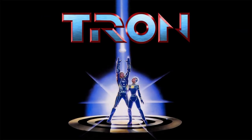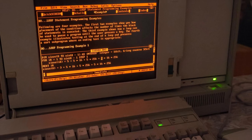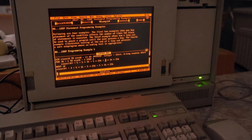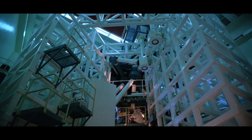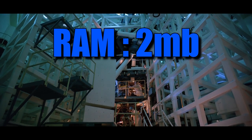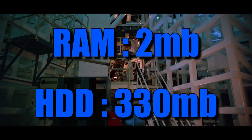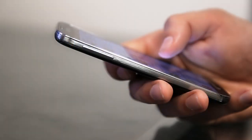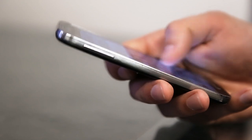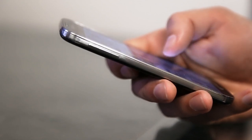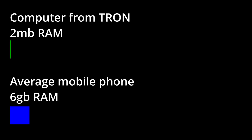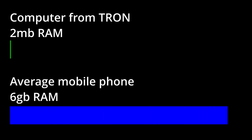When Tron came out, it was one of the most cutting-edge movies ever made. In 1982, computers were just starting to get powerful enough to make even the most basic graphics. One of the computers used to make the CGI in Tron had 2MB of RAM and 330MB of hard disk space. To put that into terms you might understand, there are a thousand megabytes in a gigabyte. Your phone has about 6GB of RAM. There is a graph showing the average mobile phone processing power compared to that of the original computer.